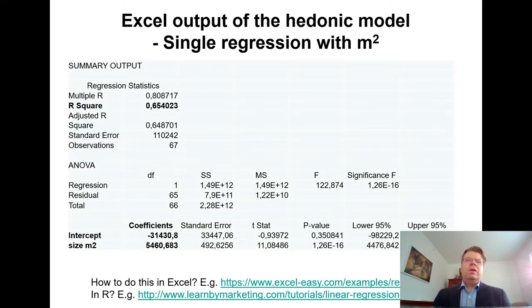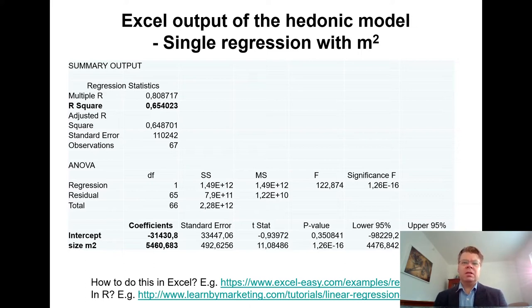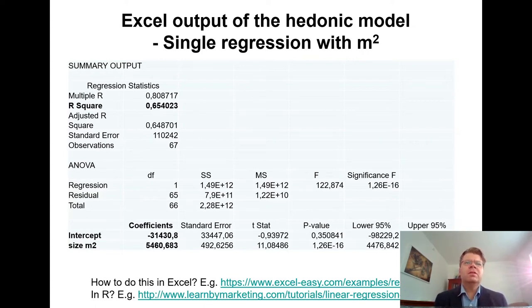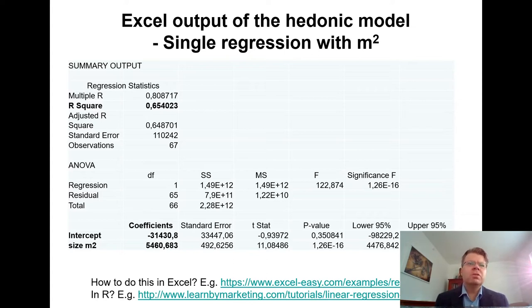Now, how do we compute this multiple regression model? I have done this typical regression statistics using Excel, here for the single regression case. I have indicated links for how to do it in Excel, R, or Stata. This is the typical regression output you get when using regression software. In Excel, you can use the Data Analysis ToolPak and choose the regression tool. The same information is available in Stata and R with very similar output.